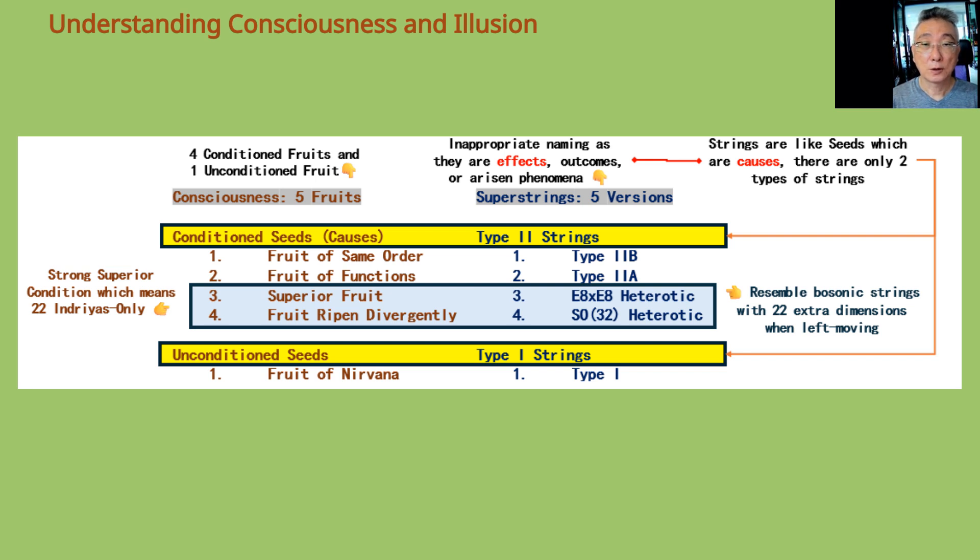Strings are like seeds in Yogacara Buddhism, which mean causes. There are only two types of strings: type 2 and type 1. String theorists are not clear about causes and effects. Using the terms of Yogacara Buddhism, five superstrings are five fruits arising from conditioned seeds, which are type 2 strings, and unconditioned seeds, which are type 1 strings.